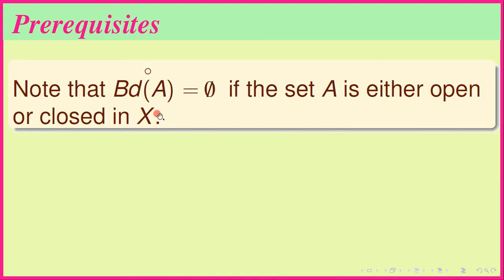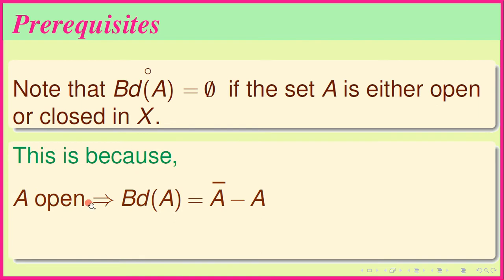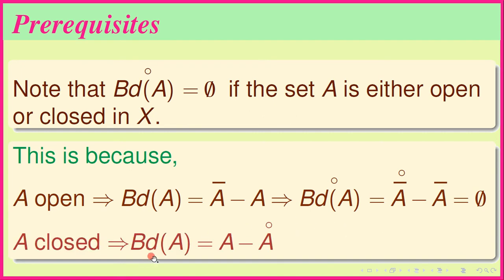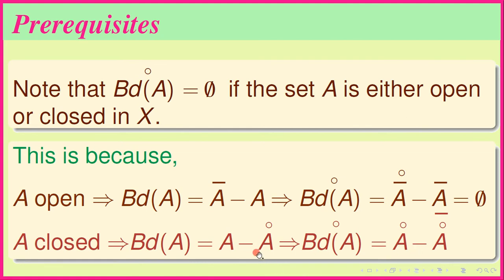Note that the boundary of A has empty interior if the set A is either open or closed in X. If A is open, then Bd(A) equals Ā minus A, so Bd(A)° equals the interior of (Ā minus A), which is empty since A° equals A. If A is closed, then Bd(A) equals A minus A°, and again Bd(A)° is empty since A° is contained in its own closure.